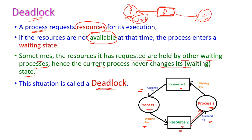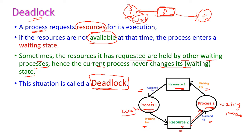Similarly, resource 2 is assigned to process 2, but process 2 is waiting for resource 1, and resource 1 is already assigned to process 1. So this is a hold-and-wait state. The process is waiting for a resource that is already assigned to some other waiting process, and hence the current process never changes its waiting state. This situation is called a deadlock.